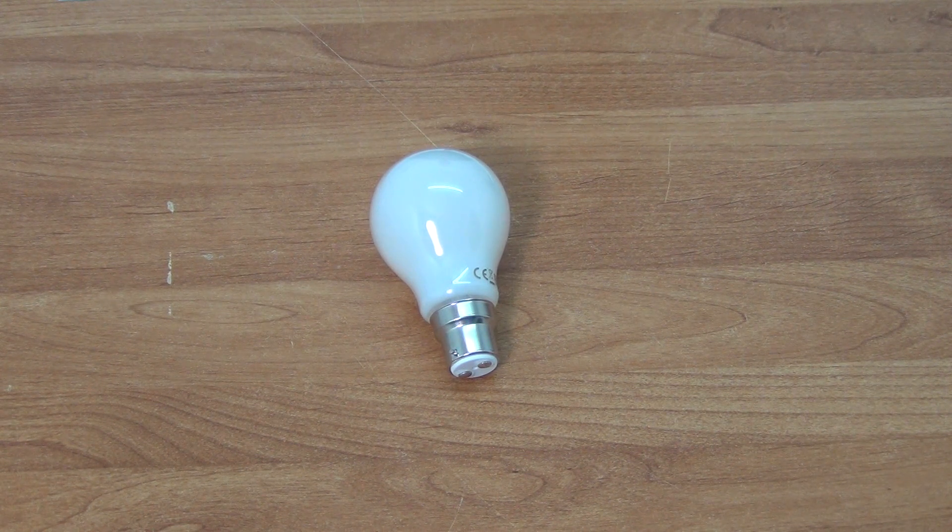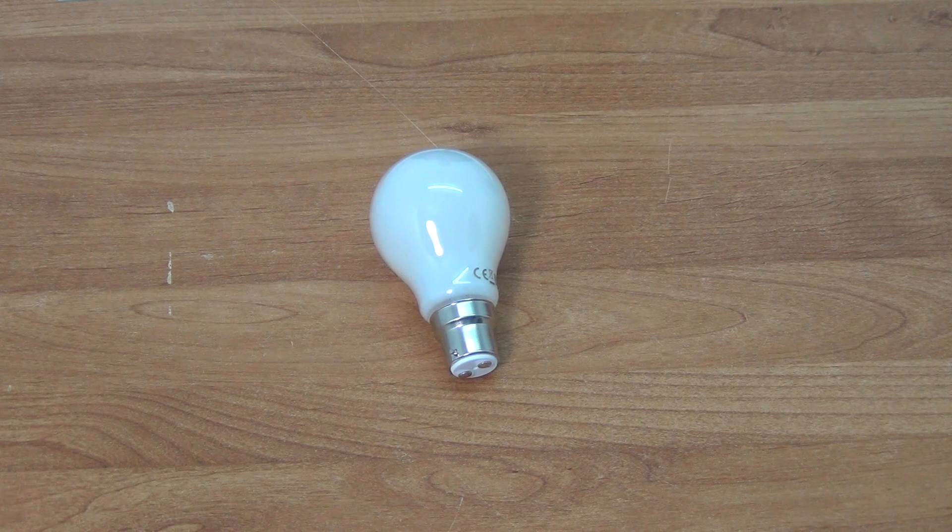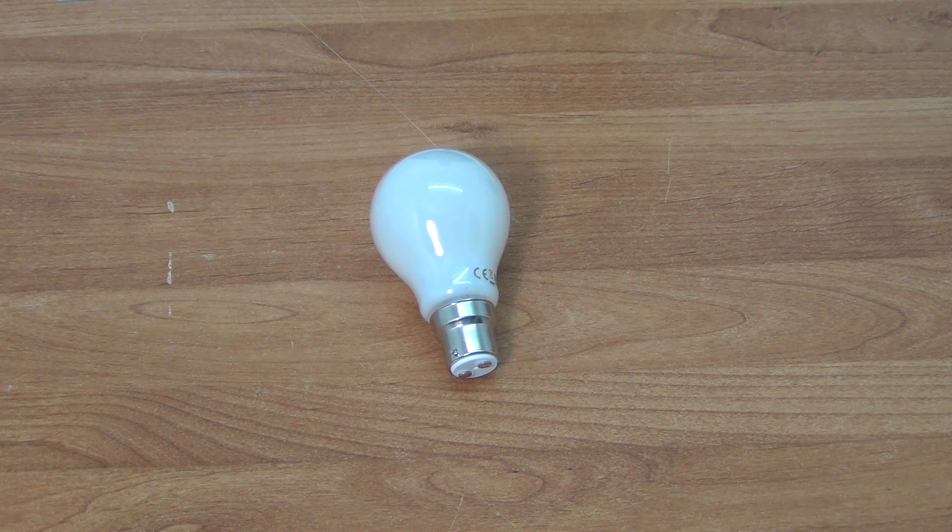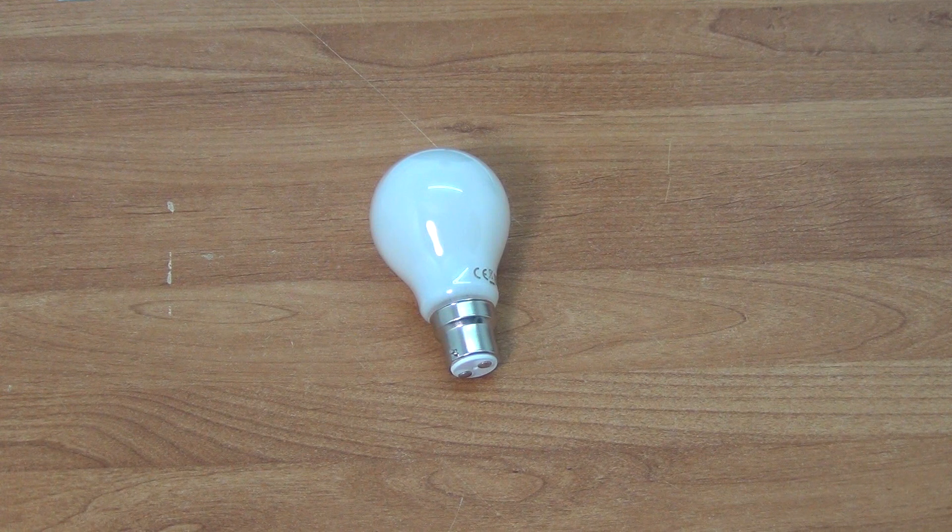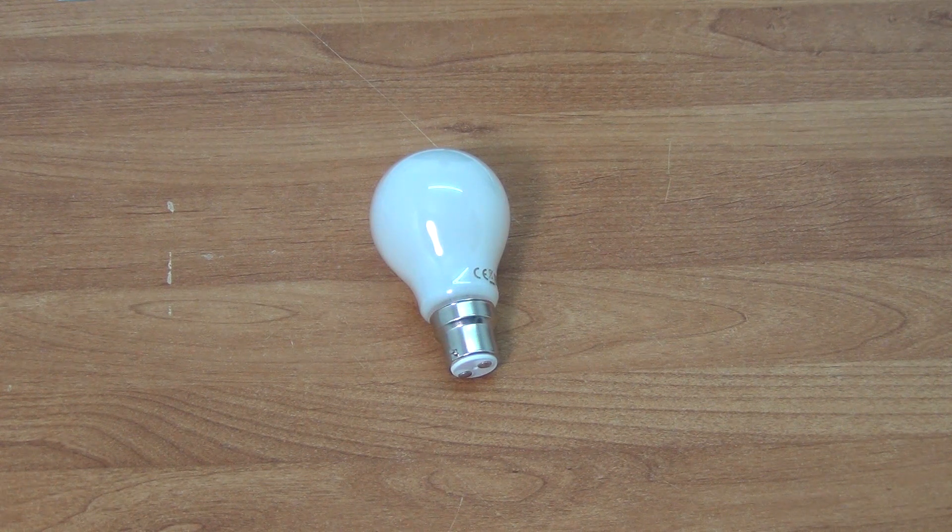It's going to give you an energy saving of probably about 85 to 90 percent on the traditional incandescent light bulb. In terms of life expectancy, it's 15,000 hours of continuous use or 15,000 on-off cycles.